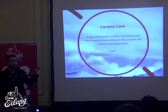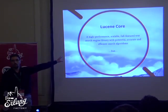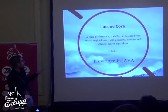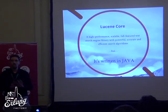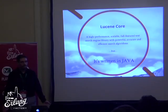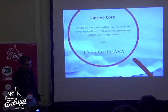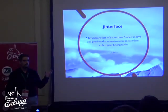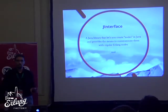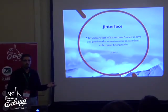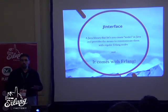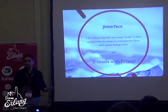The first tool we found was Lucene Core. To read its description: "Lucene Core is a high-performance, scalable, full-featured text search library with powerful, accurate, and efficient search algorithms." It was all that we needed, but it was written in Java and we wanted an Erlang application. On the other side, we have JInterface. JInterface is a Java library that lets you create Erlang nodes inside your Java programs, send messages, and connect with regular Erlang nodes. And best of all, it comes with the OTP distribution — so you don't have to download or install anything. It's already there.